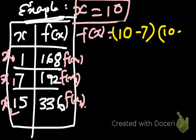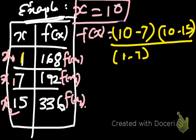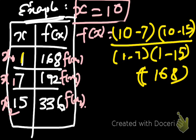That is 10 minus 15 by, in this, we only go for x0 minus the rest of the terms. So, x0 is 1. So, 1 minus 7 into 1 minus 15, into 168.